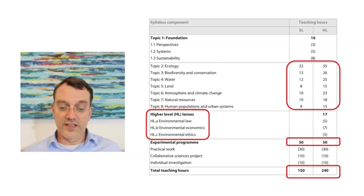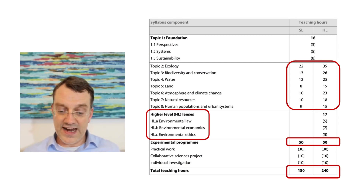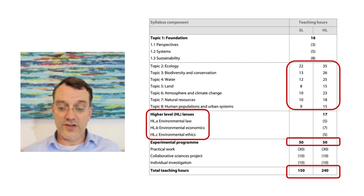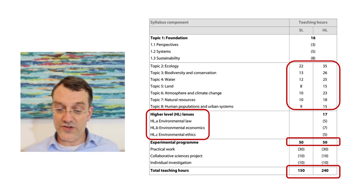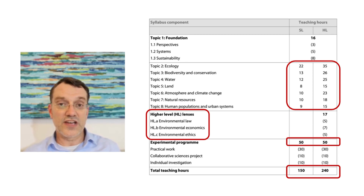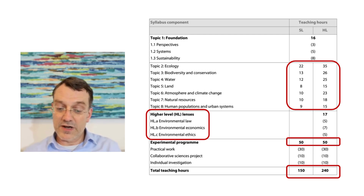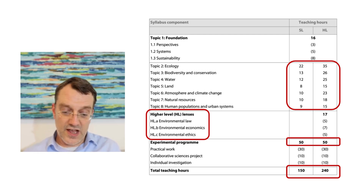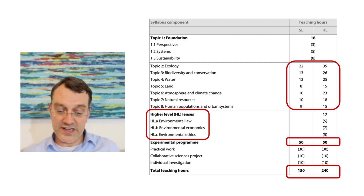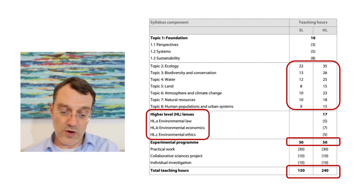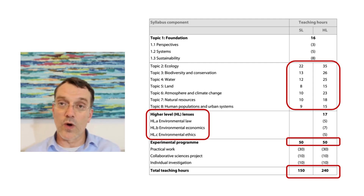Let's look at the syllabus. Here's the official outline from the IB. SL and HL students are all going to be taking Topic 1, Foundations, for about 16 teaching hours or lessons. That covers environmental perspectives, systems, and sustainability — a lot of things carried over from the old Topic 1.